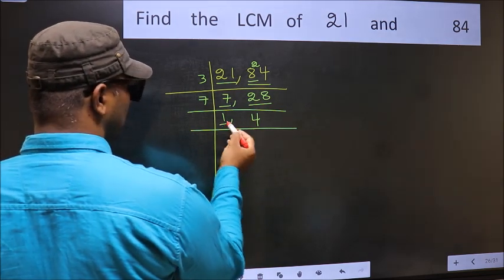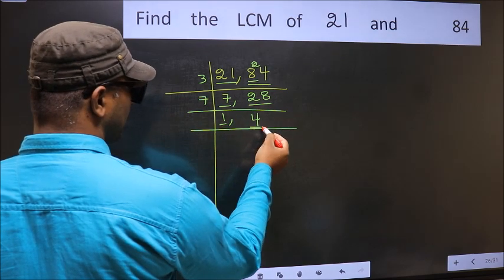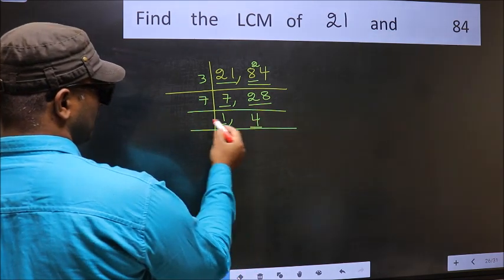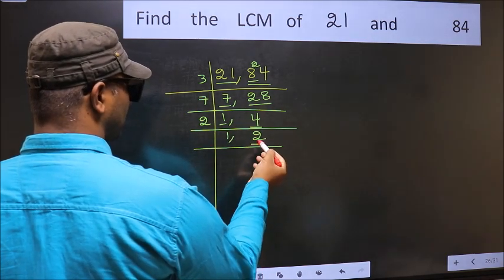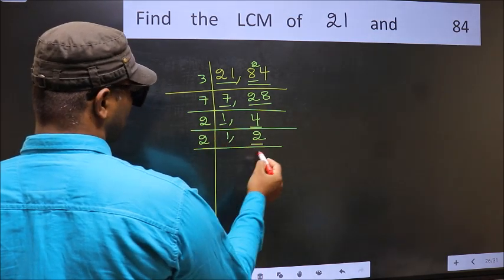Now we got 1 here. So focus on the next number 4. 4 is 2 times 2 is 4. Now here we have 2, 2 is a prime number. So 2 times 1 is 2.